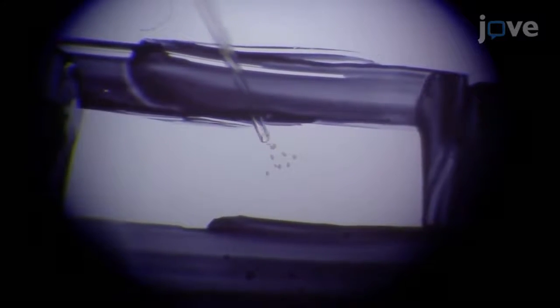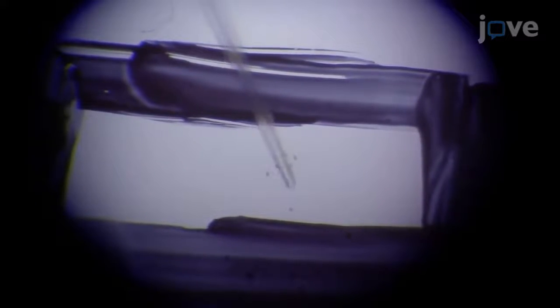Dispense the embryos into the central rectangle of the coverslip of a steel imaging chamber filled with fresh M9 buffer. Gently orient the embryos vertically so that the long axis of each embryo is perpendicular to the long axis of the coverslip.